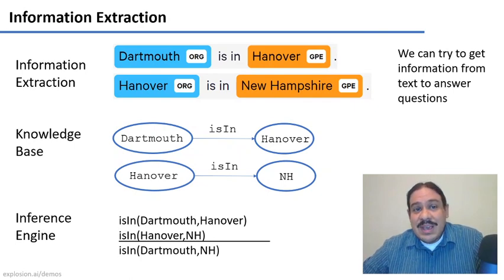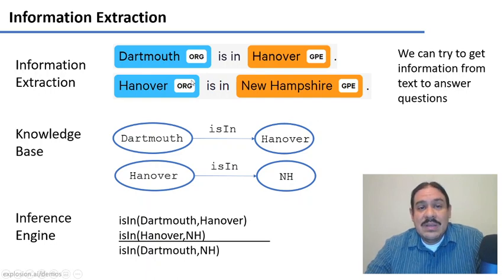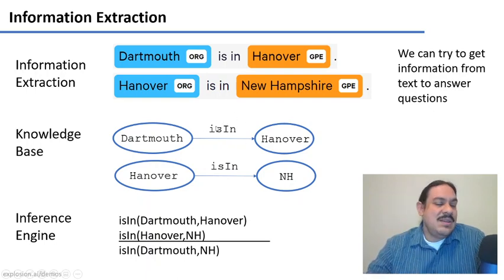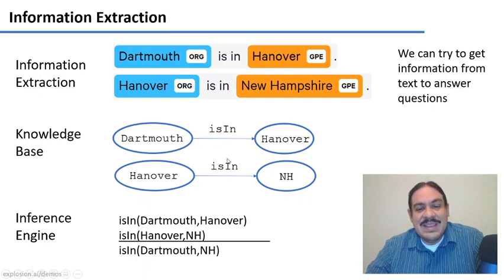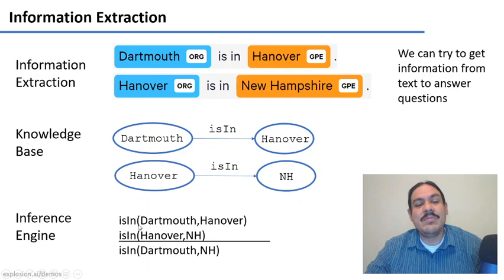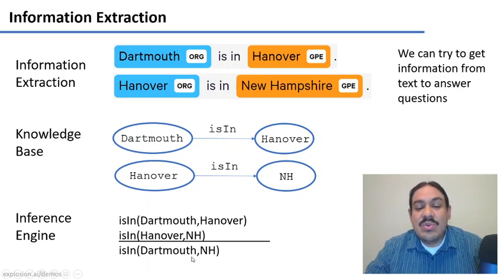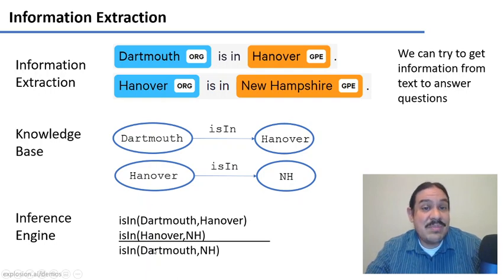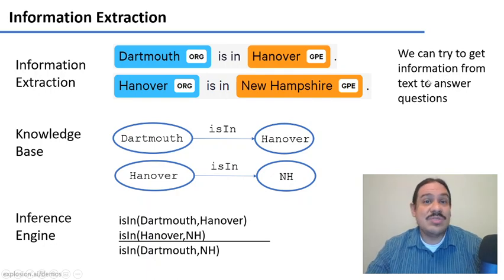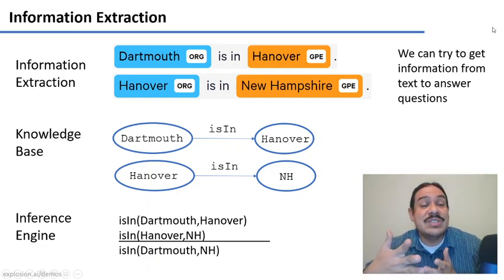Another type of extraction that we have is information extraction. Let's say we define some sort of rule that tells you that whenever you find the words is in, you're going to extract the element on the left and the element on the right. So Dartmouth is in Hanover. Hanover is in New Hampshire. So if we have these sentences, we will extract that there's a relationship between them. The relationship is in. So that Dartmouth is in Hanover and Hanover is in New Hampshire. If we store these in a database, then we can do inference. We can try to extrapolate new information. For example, if we have the relationship that Dartmouth is in Hanover and Hanover is in New Hampshire, we could use transitivity and extrapolate that Dartmouth is in Hanover. So this is new knowledge that was not in the original text, but that we have managed to derive from existing knowledge. We can use information extraction to answer questions, for example. And this is something that your search engine is doing every day when you ask it a question.